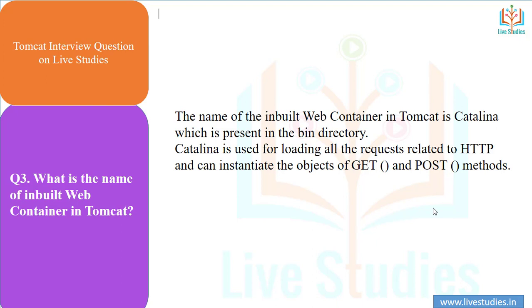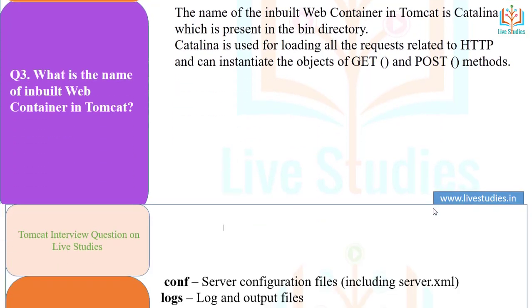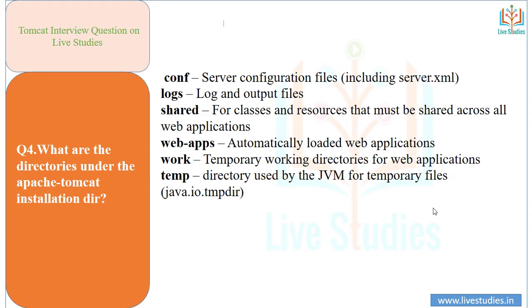Another question: what is the name of the inbuilt web container in Tomcat? The name of the inbuilt web container in Tomcat is Catalina, which is present in the bin directory. Catalina is used for loading all request-related HTTP and can handle GET method and POST method objects.